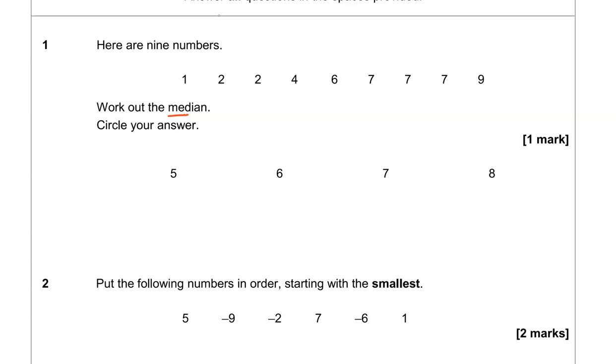So the median is the middle number when you've got the numbers in order. To work out that middle number I'm going to cross out one on each side each time. And then we have six in the middle. So we've got to circle the answer and that is six.